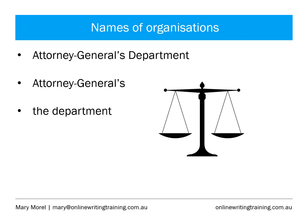We use capitalisation with proper nouns — names of people, places and organisations. Looking at the names of organisations: take this example, The Attorney General's Department. It has capitals on Attorney General's. When we abbreviate it, it still has capitals, but when we are referring to the department generically, it's lowercase.